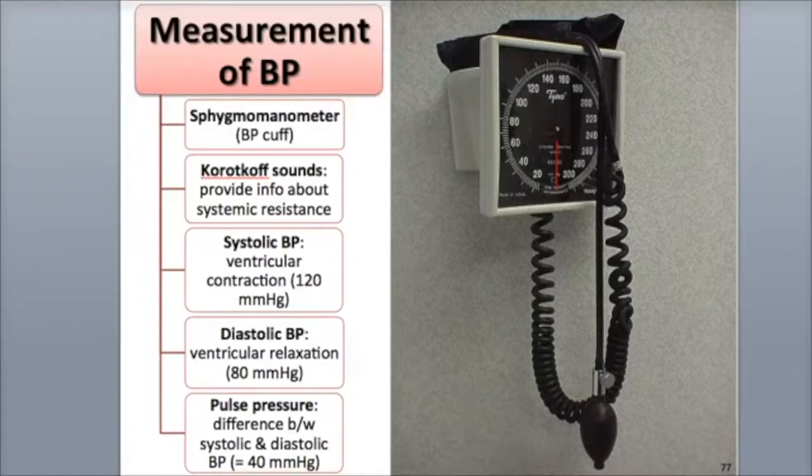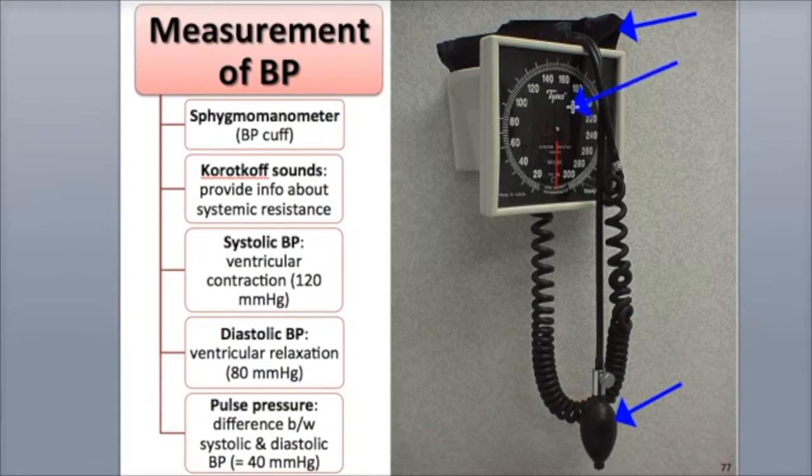Blood pressure is typically measured in the brachial artery of the upper arm using a blood pressure cuff called a sphygmomanometer. This consists of an inflatable cuff attached to a rubber bulb that one pumps to inflate the cuff, along with a pressure meter that reads the cuff's pressure.